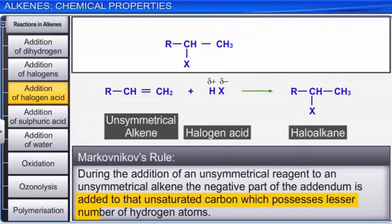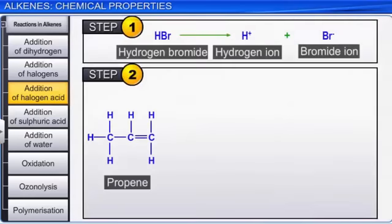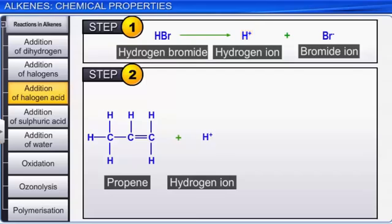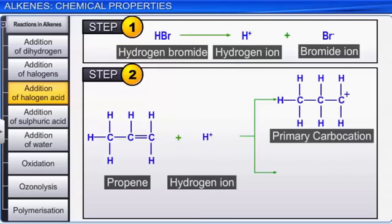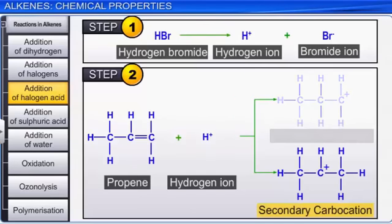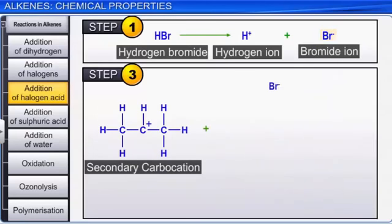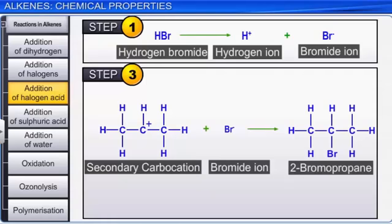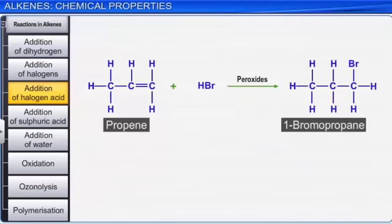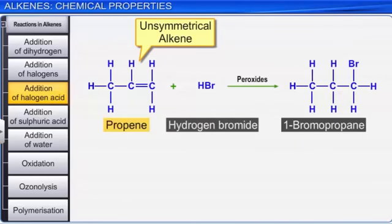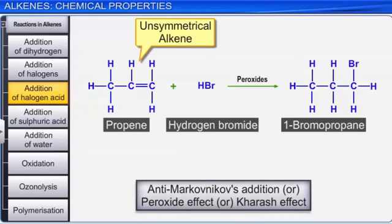In the reaction between propene and hydrogen bromide, hydrogen bromide provides the electrophile H⁺, which attacks the carbon-carbon double bond, leading to the formation of primary and secondary carbocations. The secondary carbocation, being more stable, is formed readily and is then attacked by the bromide ion to form 2-bromopropane as the major product. However, the addition of hydrogen bromide to unsymmetrical alkenes like propene in the presence of peroxide is contrary to Markovnikov's rule, and is known as anti-Markovnikov addition, or the peroxide effect, or the Kharash effect, as it was first observed by M.S. Kharash and F.R. Mayo in 1933 at the University of Chicago.